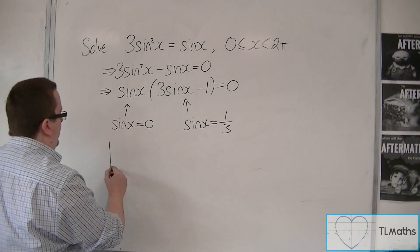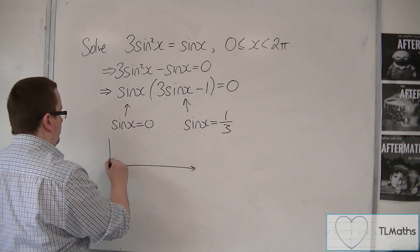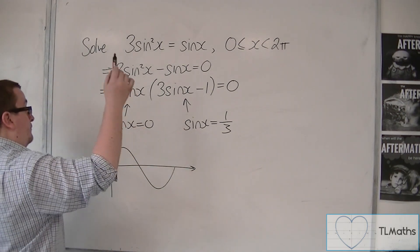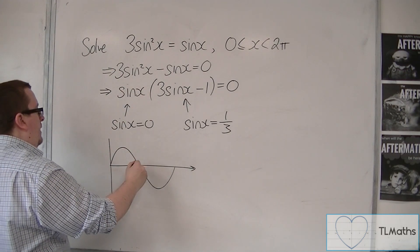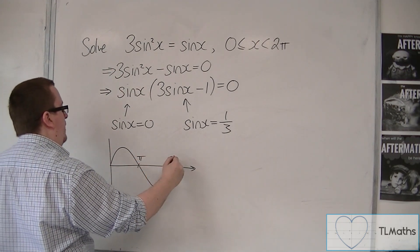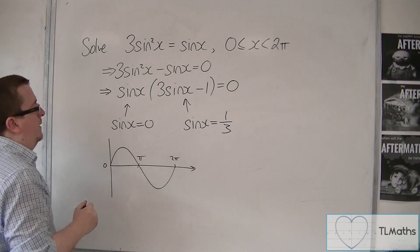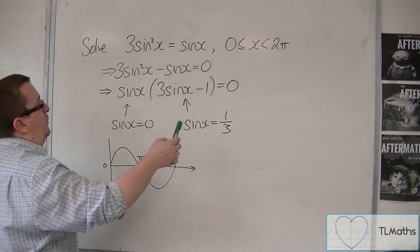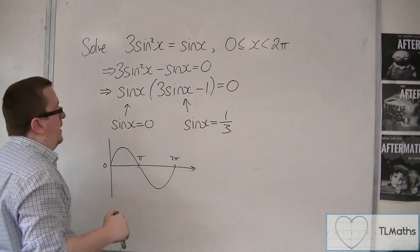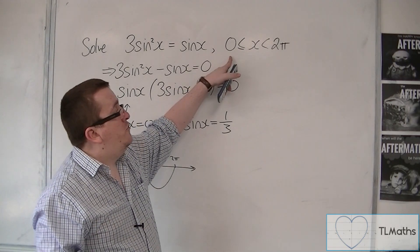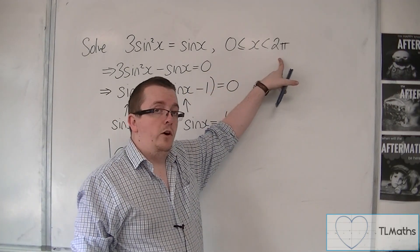So we sketch sine. This is pi, and that is 2 pi, and there's 0. Now, we're solving between 0 and 2 pi, but as you can see, 0 is included, but 2 pi is not.